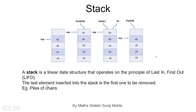The last element inserted into the stack is the first one to be removed. Suppose we have 10 inserted, then 20, then 30, then 40. The removal order will be 40, then 30, then 20, then 10 — so we access 10 last. This last-in-first-out principle has many real-life examples, like piles of chairs and card decks.